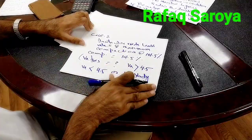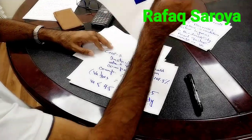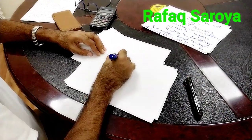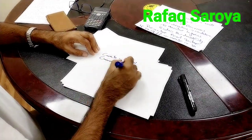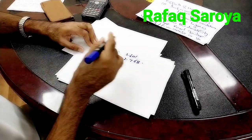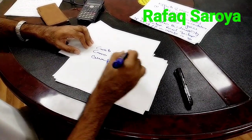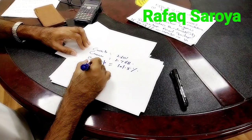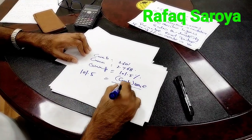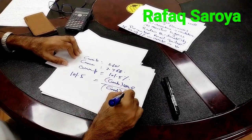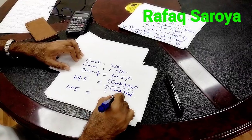This is the next case. As we have done earlier, Gmb is equal to 2.601, Gmm is 2.768, and compaction is 101.5 percent. We will use this formula: 101.5 is equal to Gmb of the core divided by the Gmb of the Marshall reference, where the reference value 2.601 is given to us.